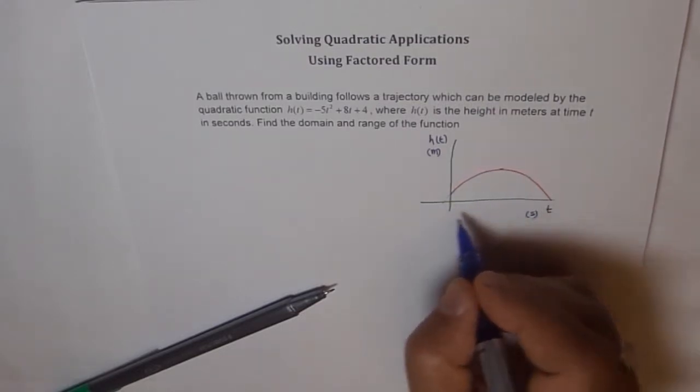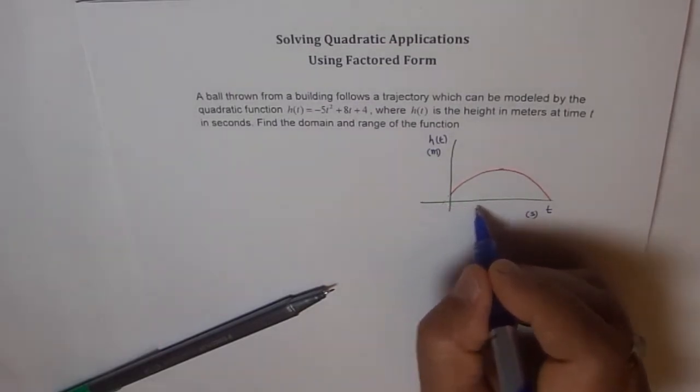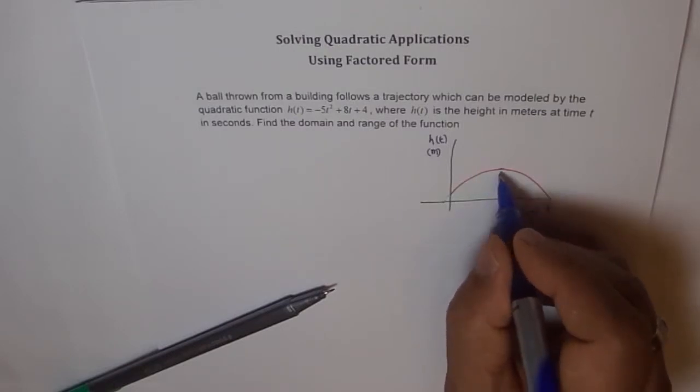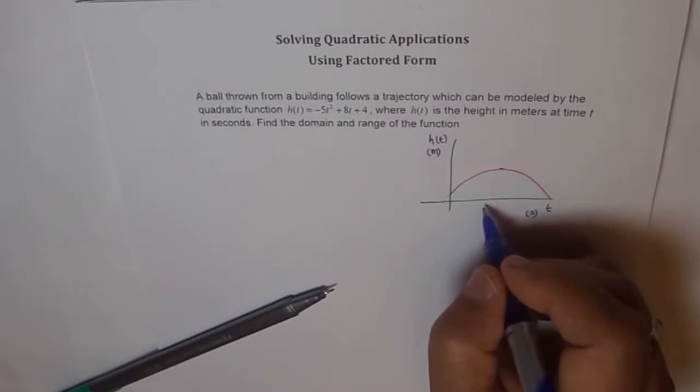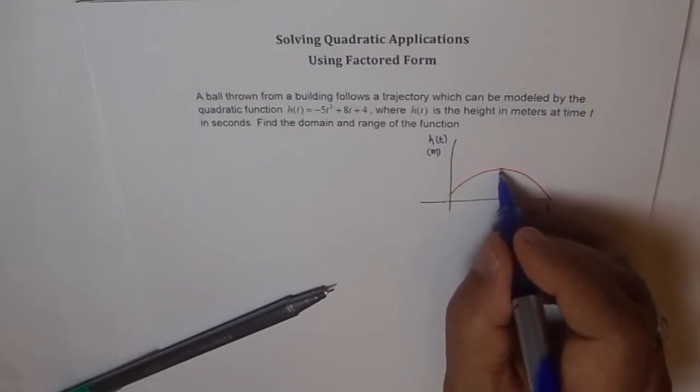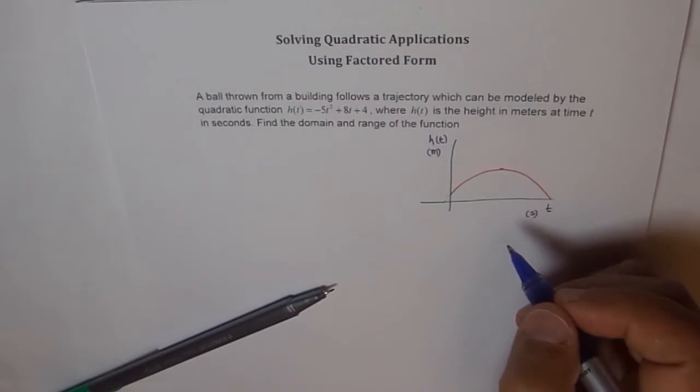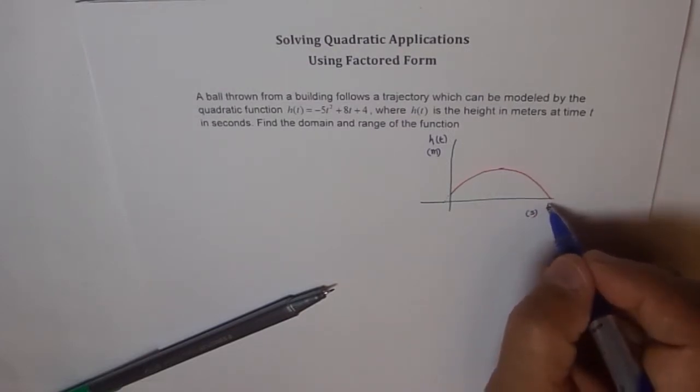Right in the middle of these two, we will have our axis of symmetry. And on that axis of symmetry, we will get the vertex. Finding the value of h(t) at that value of t, we will know what the maximum is. Zero is our minimum for this path.